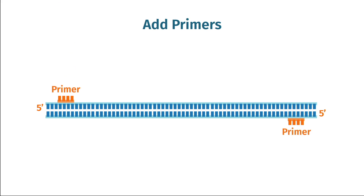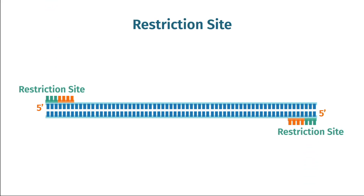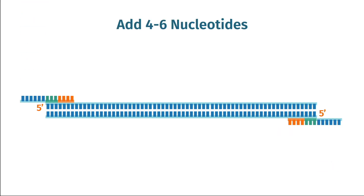Most restriction enzymes do not cut efficiently at sites located at the end of a fragment. Restriction enzymes generally require three to five flanking nucleotides for optimal cleavage. To ensure efficient cleavage, add four to six nucleotides outside of each added restriction site. The use of restriction enzymes to clone a PCR product is ideal for inserting your amplified sequence into a specific location in a plasmid. After amplifying your target sequence, you can proceed with standard restriction and ligation-based cloning steps.